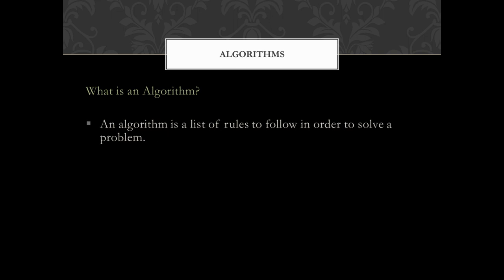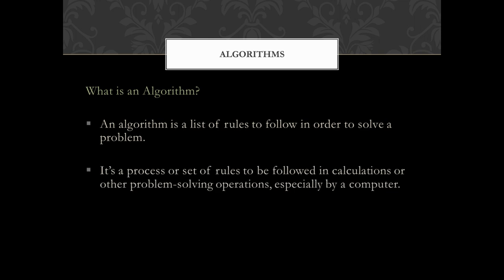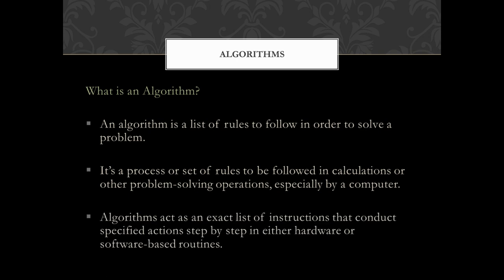What is an algorithm? An algorithm is a list of rules to follow in order to solve a problem. It's a process or set of rules to be followed in calculations or other problem-solving operations, especially by a computer. Algorithms act as an exact list of instructions that conduct specified actions, step by step, in either hardware or software-based routines.